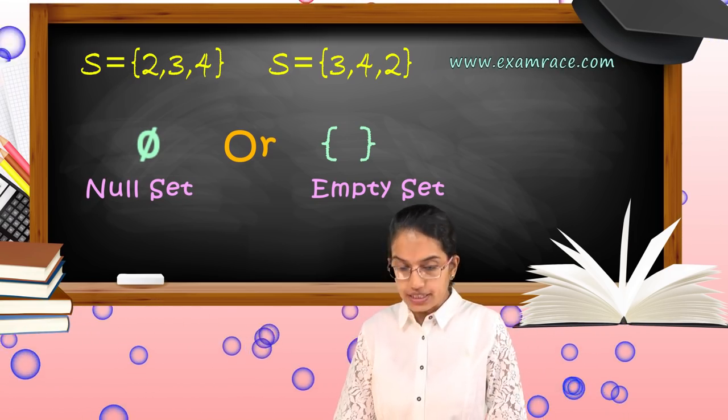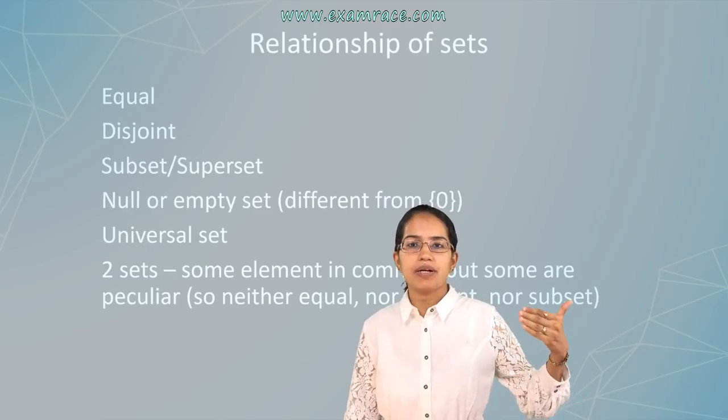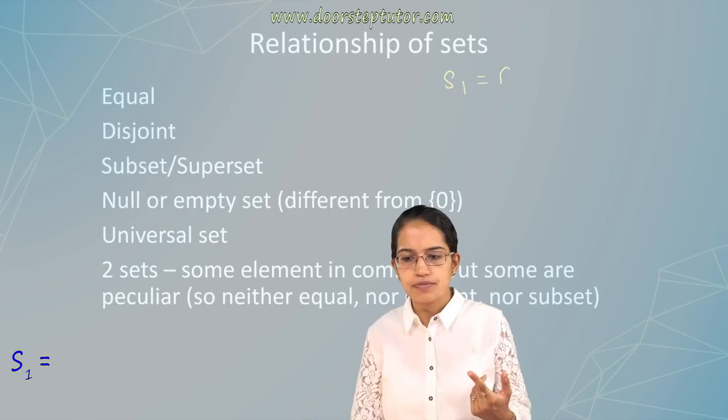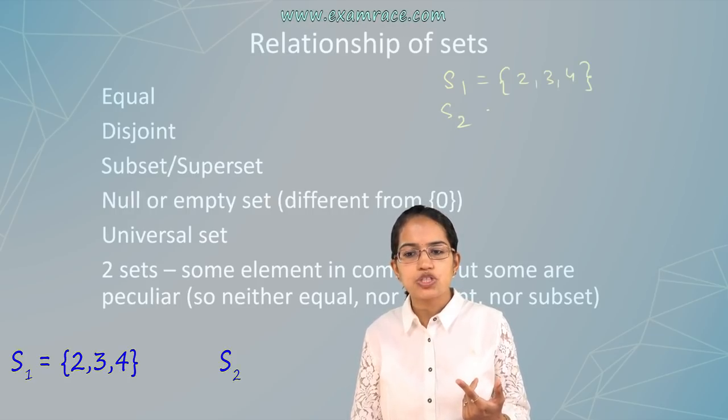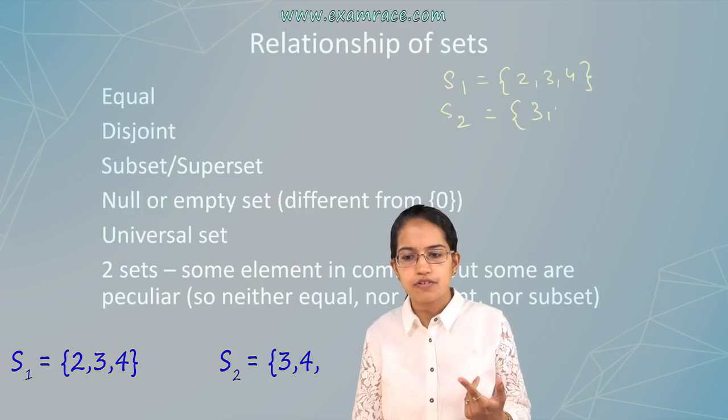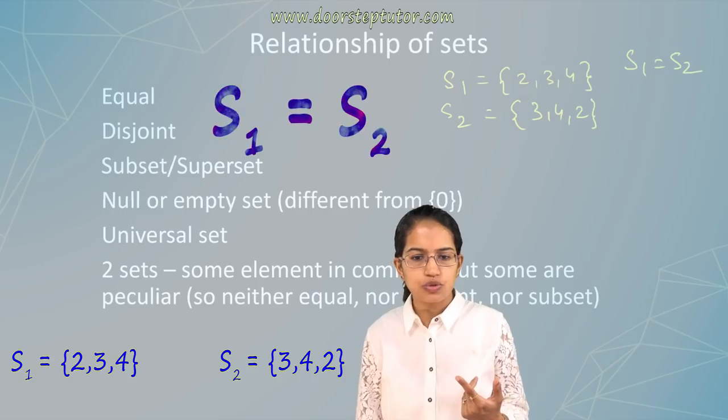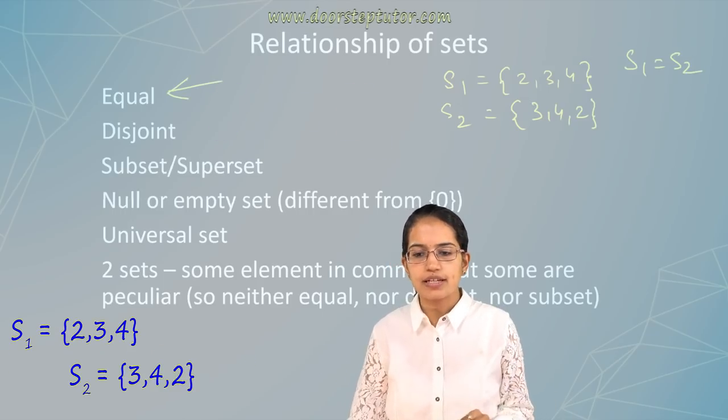Now this S or the relations among the set could be explained under various ways. First I say S1 is 2, 3, 4. S2 is 3, 4, 2. So in this case S1 is equal to S2. Both sets are equal.